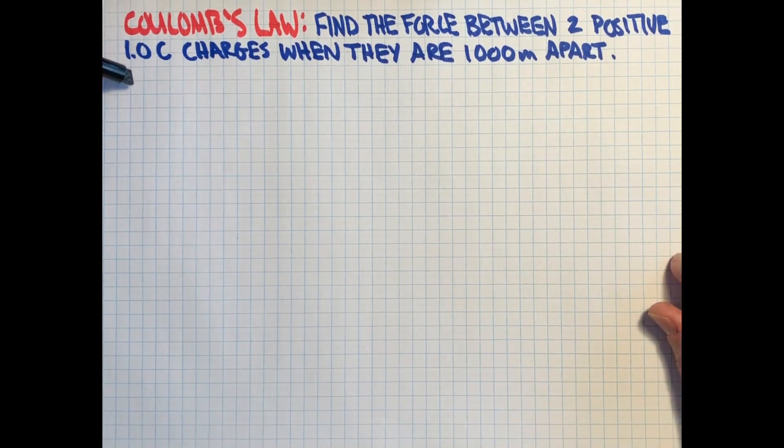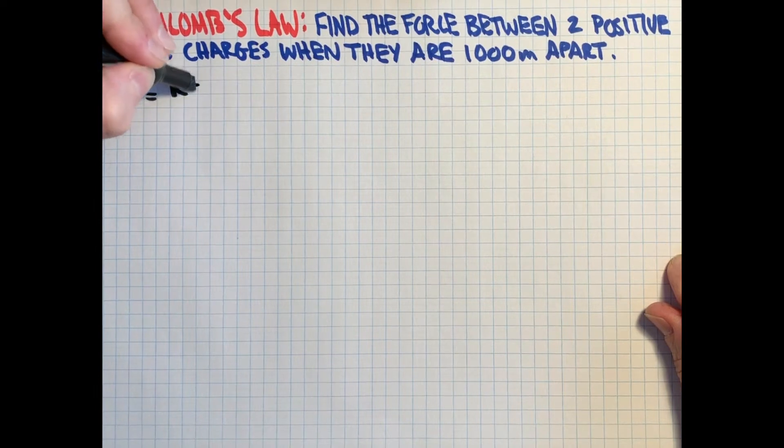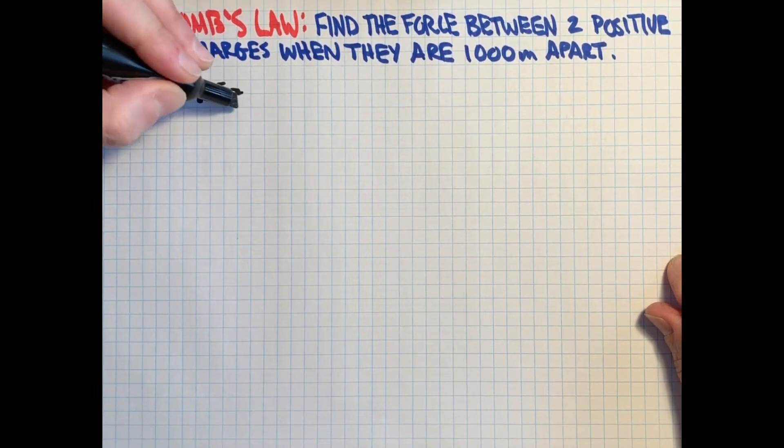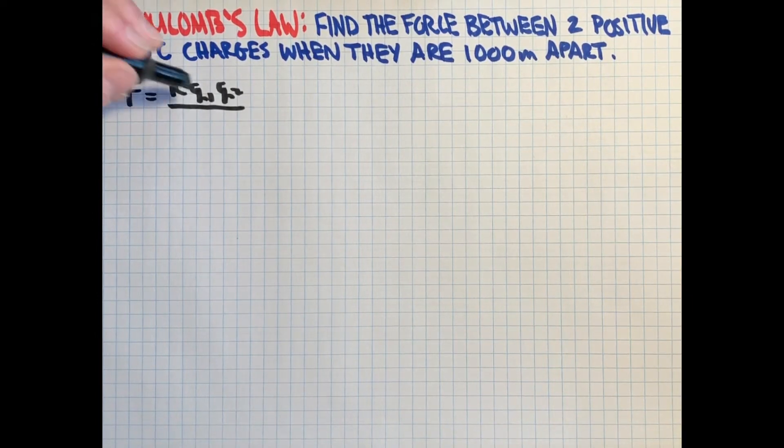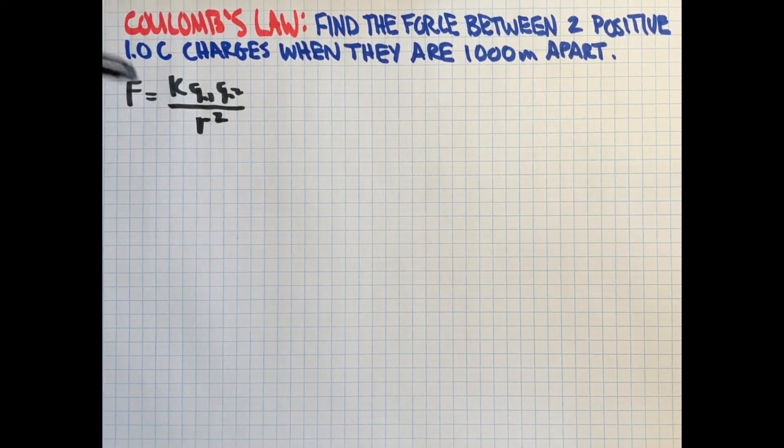So the first thing we need to know is Coulomb's law. Coulomb's law is F equals KQ1Q2 over R squared. Q1 is charge 1, Q2 is charge 2. It does not matter which one you call 1 and 2. In this case, they're both 1 Coulomb charge positive, so 1 and 1 is easy.